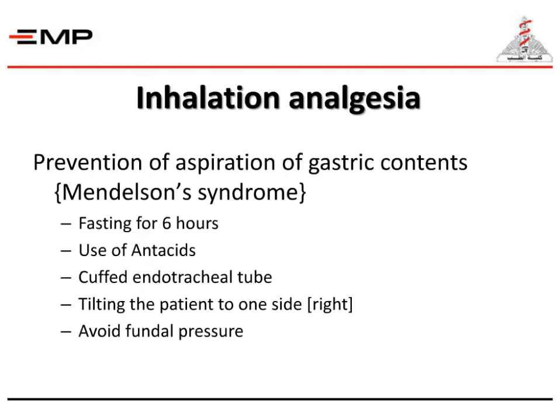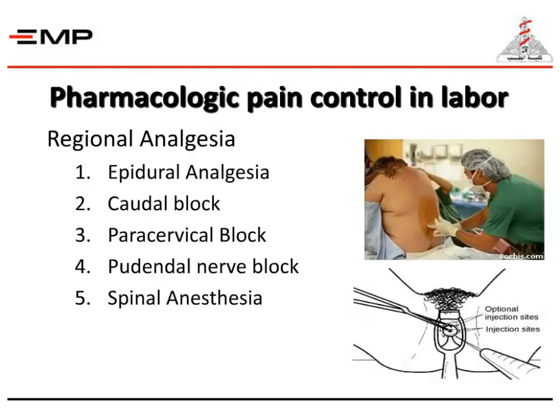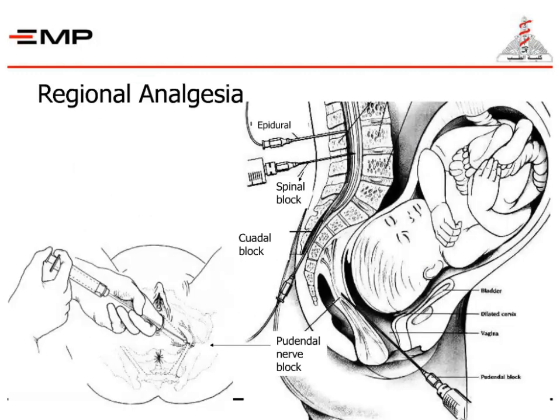Avoid fundal pressure during the second stage of labor. Regional analgesia includes epidural analgesia, caudal block, paracervical block, pudendal nerve block, and spinal anesthesia — and nothing matches the epidural analgesia. This figure represents the sites of regional analgesia, including epidural, caudal analgesia, and spinal block.